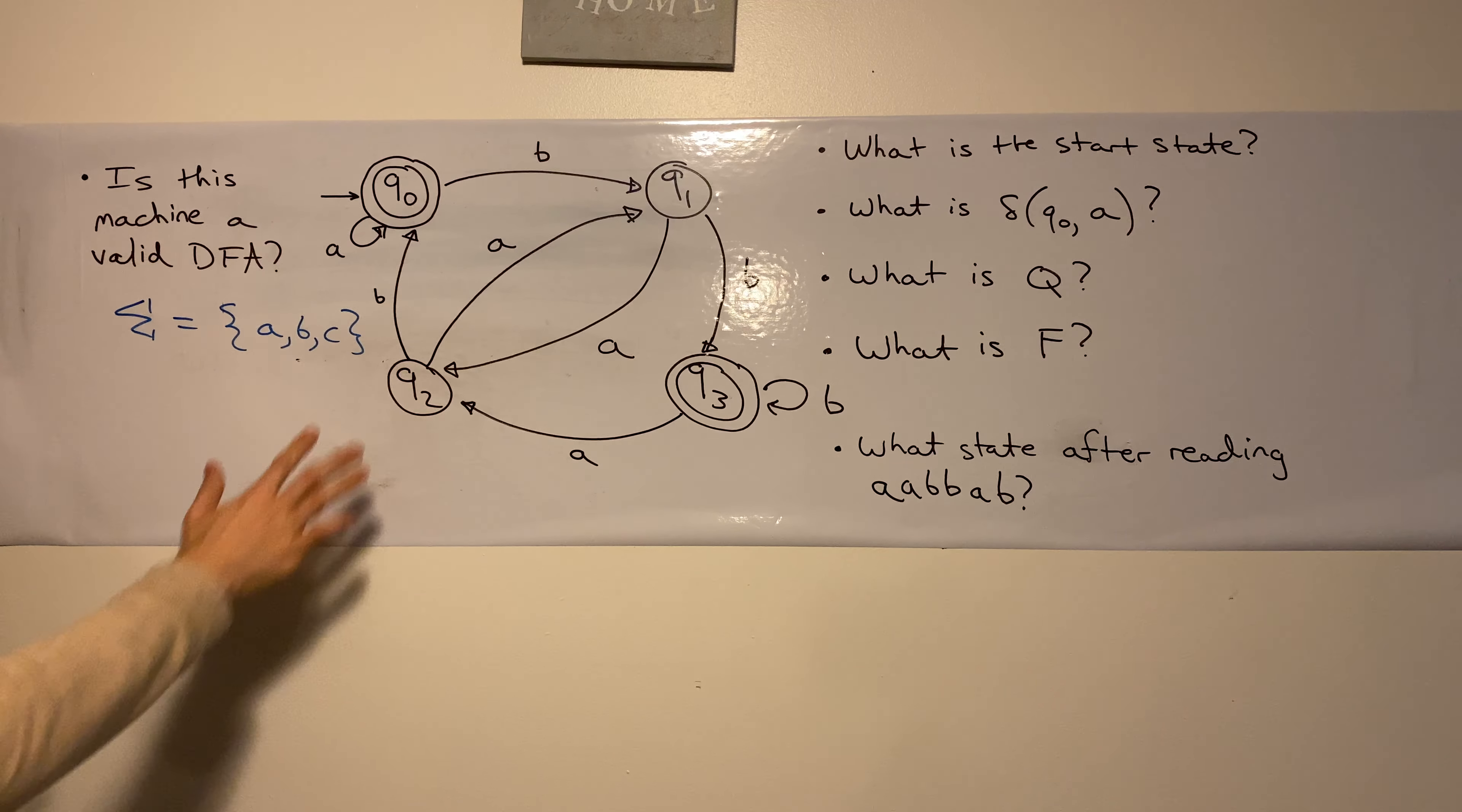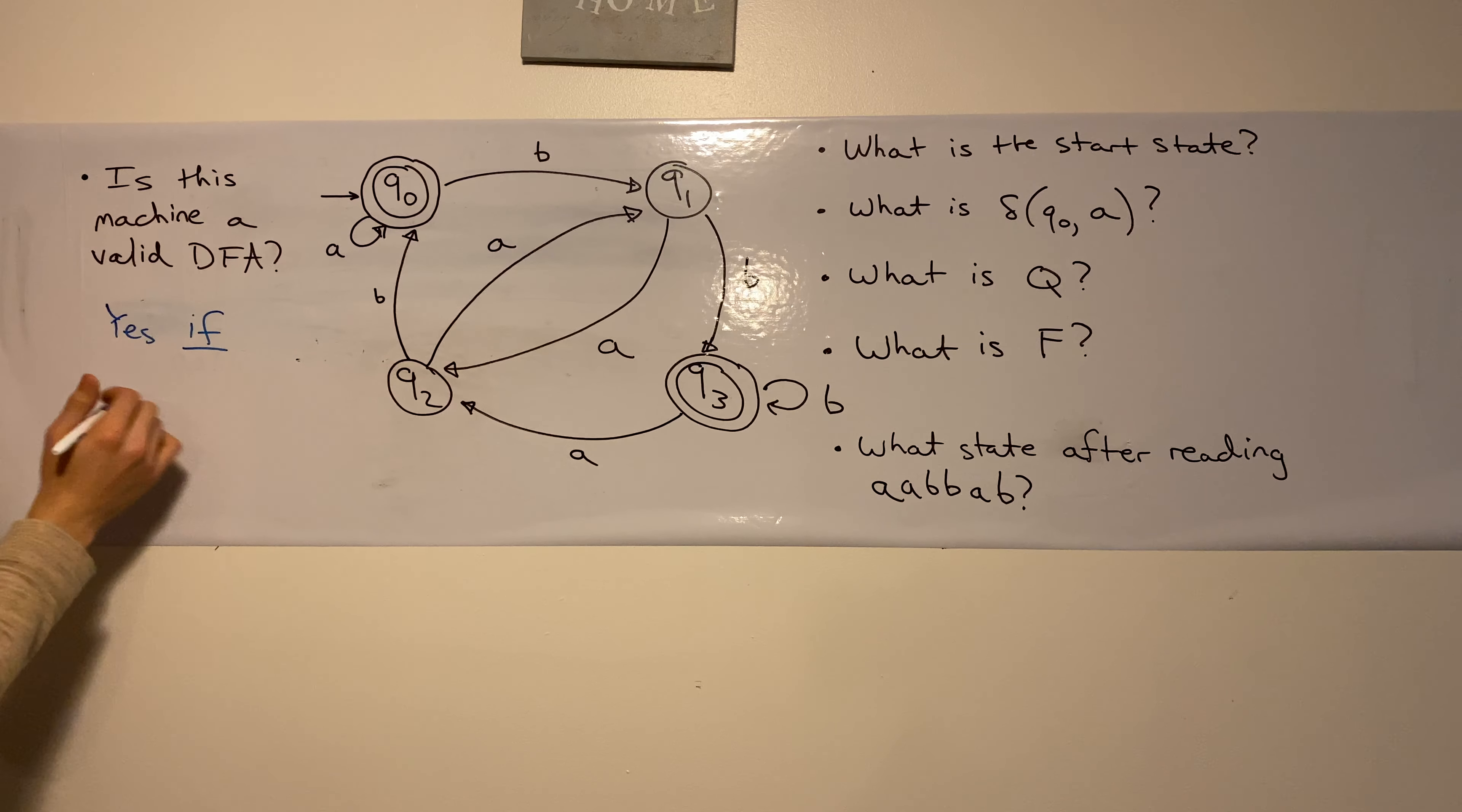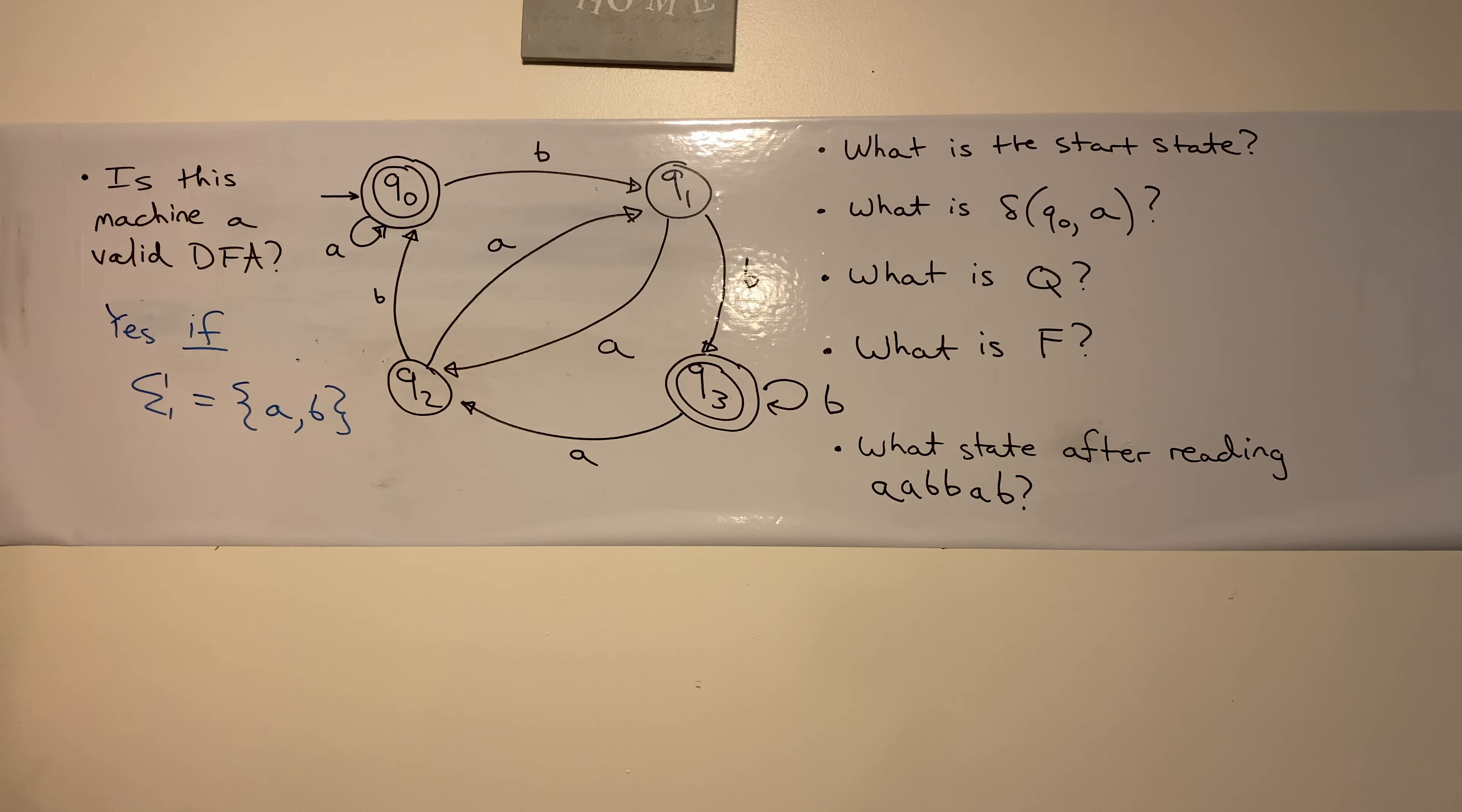Therefore, the answer to this question of whether it's valid is yes if, so the big if here, if the input alphabet sigma is the set A, B. So in this case, it is a valid DFA.